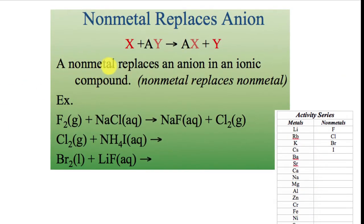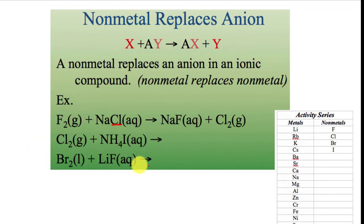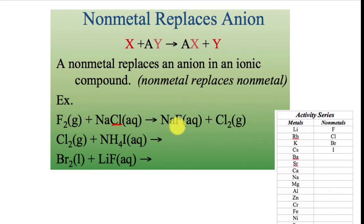The other type is nonmetals replacing anions — nonmetals replacing nonmetals. Notice I have two activity series: one for metals and one for nonmetals. If I look at a reaction of fluorine — a single substance — reacting with an ionic compound, it's going to attempt to replace the nonmetal, which in this case would be chlorine. This is the most missed question — a lot of students have trouble with nonmetals replacing anions. I only have four elements to work with: fluorine, chlorine, bromine, and iodine. Fluorine replaces everything, so just like with metals, the top element replaces everything below it. Fluorine comes in and replaces chlorine — it can, so it takes its place. Fluorine is here and chlorine comes out. These come out as a gas because they're nonmetals on the right side of the table and they tend to be gases.